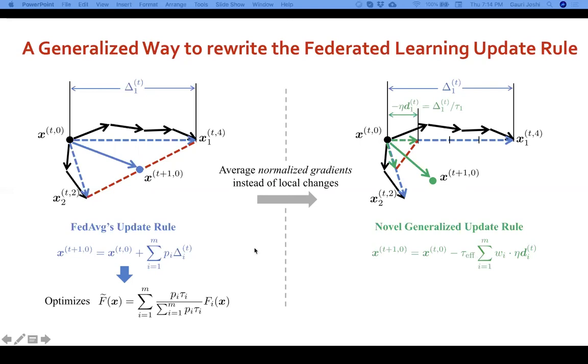It differs from the original federated averaging update rule in three ways. The first difference is that instead of delta_i, we have d_i, where d_i is this normalized gradient. Secondly, instead of p_i, we have w_i, which are the aggregation weights applied to these normalized gradients. And thirdly, we use this additional term, which is tau effective, which we call the effective steps per round. This you can think of as a global learning rate that the server can apply to this aggregated update to scale it up or down, depending upon how fast the global model wants to move forward.